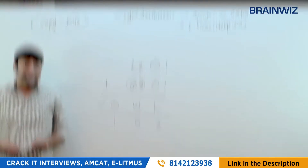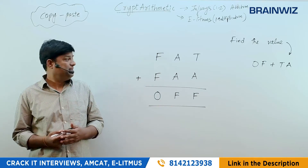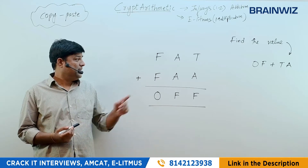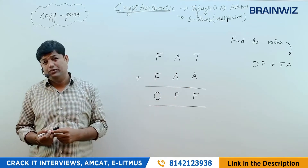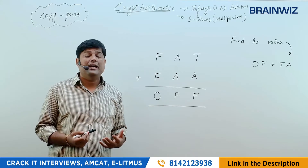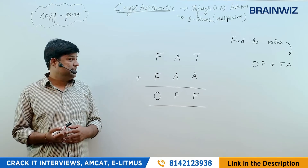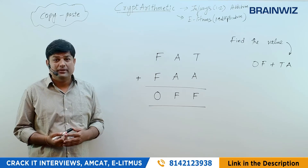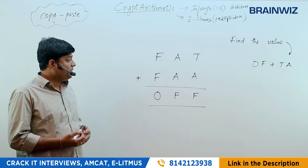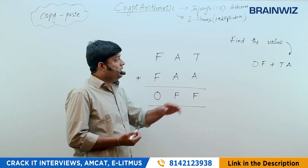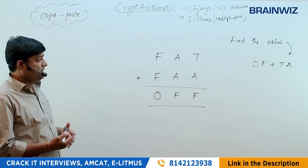Now let's go to the next question — the third question. FAT plus FAA equals OFF. This question was given by Infosys in January 2019, so it's a real exam question. Infosys has given a hint: O value is 3. We'll find all values and then compute OF plus TA.